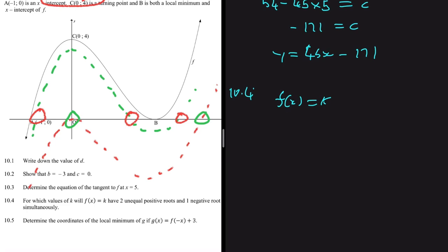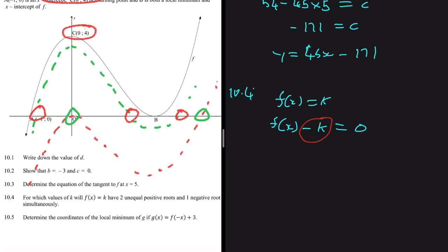We have f(x) = k, and at a root f(x) - k = 0, so it's -k that shifts the graph. If k = -1, then f(x) - (-1) = f(x) + 1 = 0, which moves the graph up — that's not what we want. So k must be greater than zero to move the graph down.